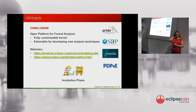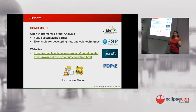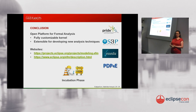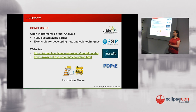In conclusion, EFMP — the Eclipse Formal Modeling Project — is an open platform for formal analysis. At the moment there is only a symbolic execution tool, but if anybody wanted to add a component, we would be glad to include it. We have a fully customizable kernel of symbolic execution that is extensible and allows developing new analysis techniques. There are several projects we are involved in where we hope to develop new things. The website is still in incubation, so not everything is there yet. If you have any questions or remarks, I'd be happy to hear them.